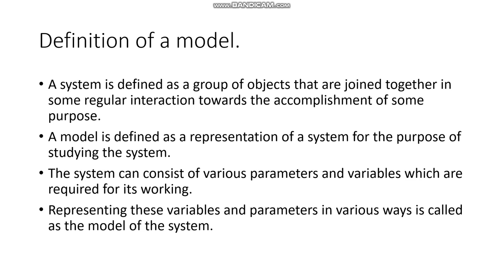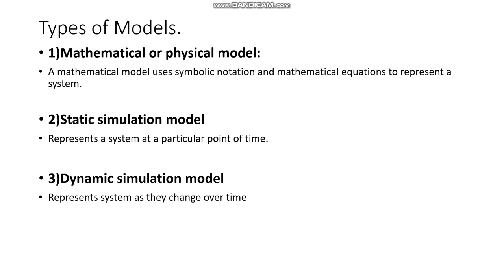Now coming to the next topic of types of models — there are basically six types. The first type is called mathematical or physical model. All the interactions and objects inside the system can be represented using symbolic notation or mathematical equations. Hence a mathematical model is defined as a model that uses symbolic notations and mathematical equations to represent a system.